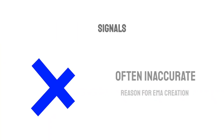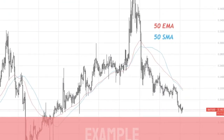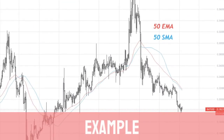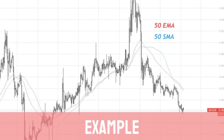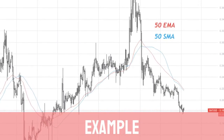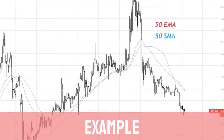Due to the lack of reactivity, the simple moving average can often be inaccurate. This was the reason for the creation of the EMA. The SMA and the EMA are not weighted in the same manner. Here we can see the difference between the 50-day EMA and the 50-day SMA.